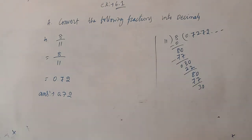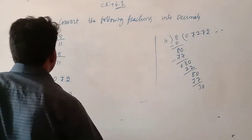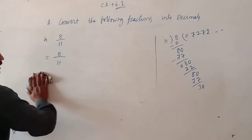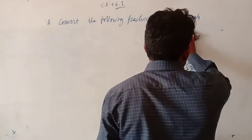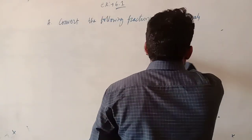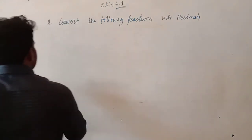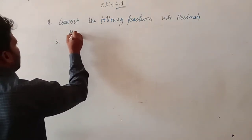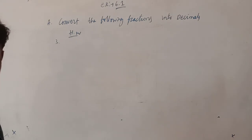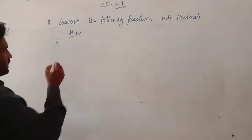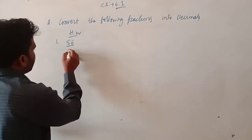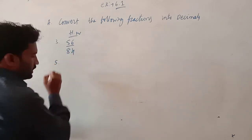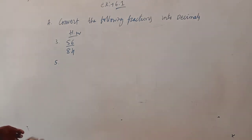So third and fifth parts are homework in this main question. Third one is 56 by 84, and fifth one is 2 by 7.